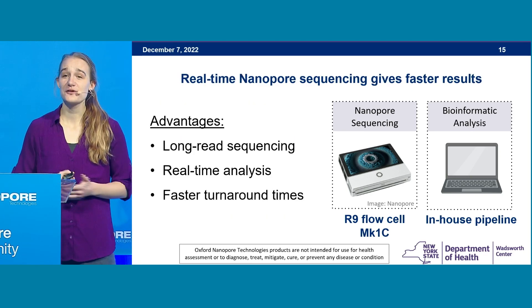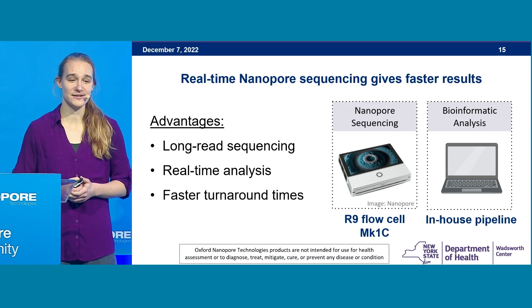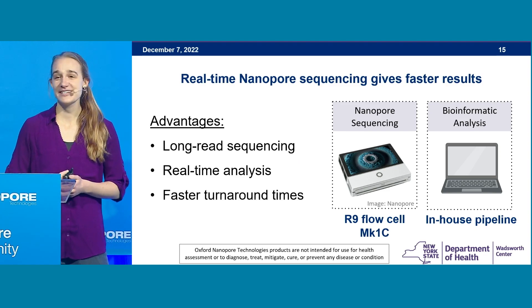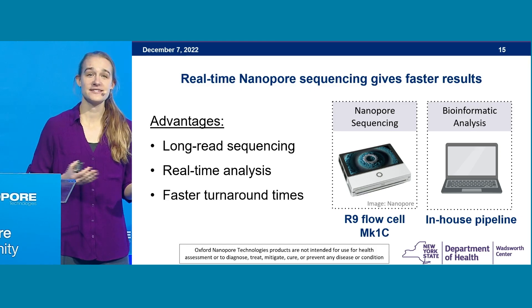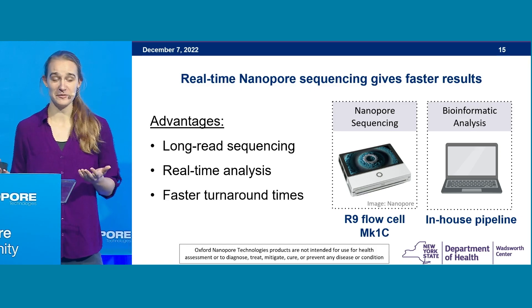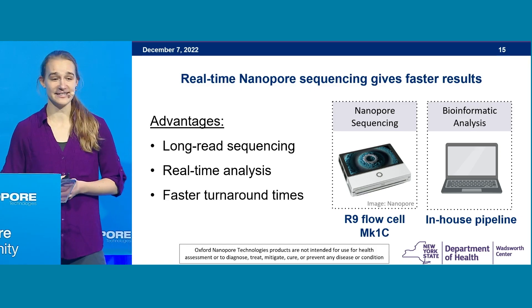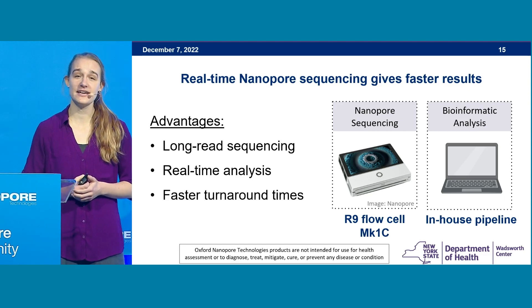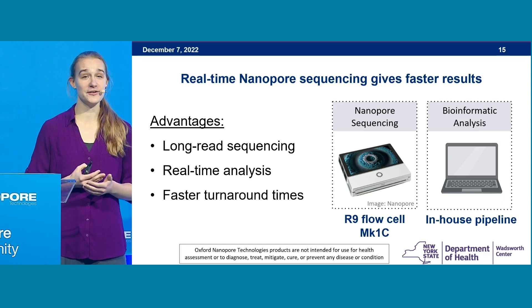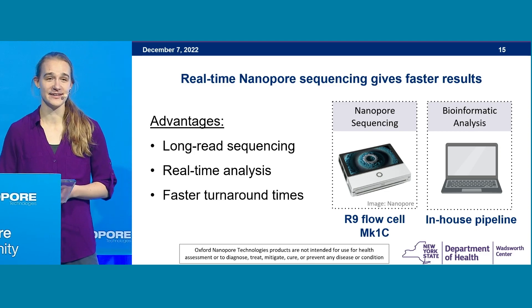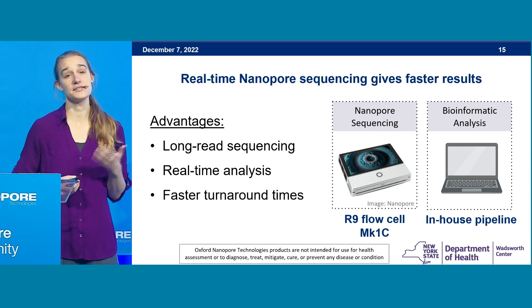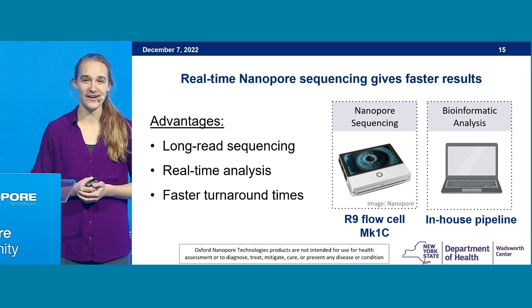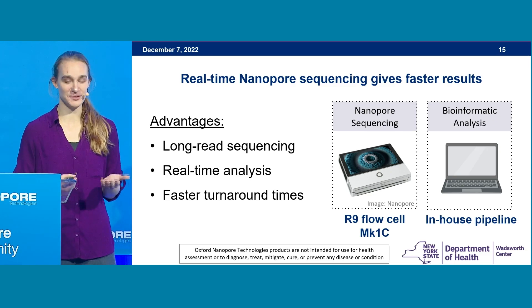The reason we chose nanopore sequencing for this application was first the ability to have long reads. This enables us to design fewer primer pairs, and we can sequence our entire amplicon in one go with consistent coverage. But one of the most important reasons is the ability to have real-time monitoring and analysis of our data. This enables us to stop the run as soon as we have sufficient data to report on, and ultimately get those results quicker.